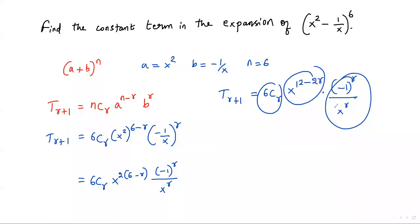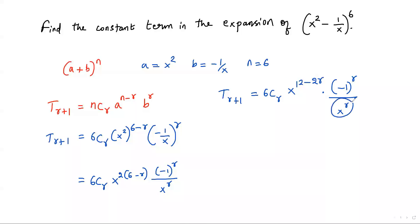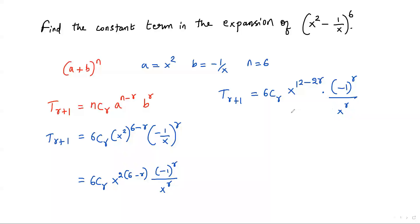All three terms are in multiplication. Whenever terms are in multiplication, the denominator of one term can be taken as the denominator for any term. So I'm going to take x to the rth power as the denominator, making simplification easier. The next step gives T(r+1) equals 6Cr times x to the power (12 minus 2r) over x to the power r, times negative 1 to the power r.